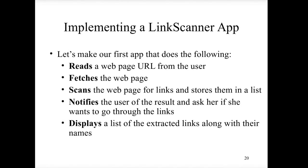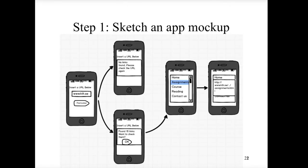In the scope of this example we will explain how to take steps toward designing and implementing this application. First, before starting to implement, it is always recommended to start with sketching an app mockup — you create the user experience by drawing it. There are tools for application mockups. User experience is one of the most important things: how the user navigates from one screen to another and how you design your screens.